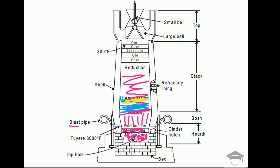Flue gases are unburnt gases produced during the chemical reaction processes inside the furnace. Because they are very light, they move to the top.